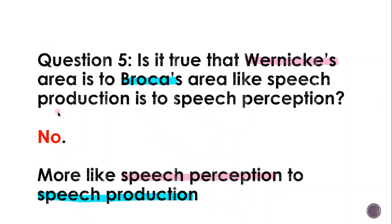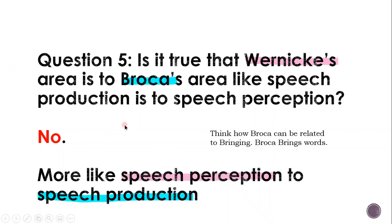So Wernicke's area is to Broca's area like speech perception is to speech production — not the other way around. Think of it this way: Broca's area brings words — it brings what Wernicke's area has figured out into speech. Wernicke's processes what's going on, and then Broca's puts what Wernicke said into effect.